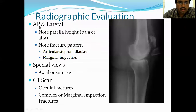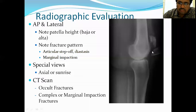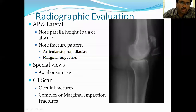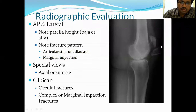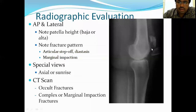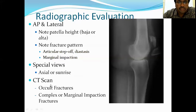X-ray AP and lateral views are usually sufficient, but sometimes a special skyline or patellar view is taken. On X-ray, the distal fragment may be displaced and the proximal fragment migrated upward due to the pull of the extensor mechanism. Always check patellar height — patella alta means the patella is high. CT scan is important for investigation, as hairline or occult fractures can be identified only on CT.